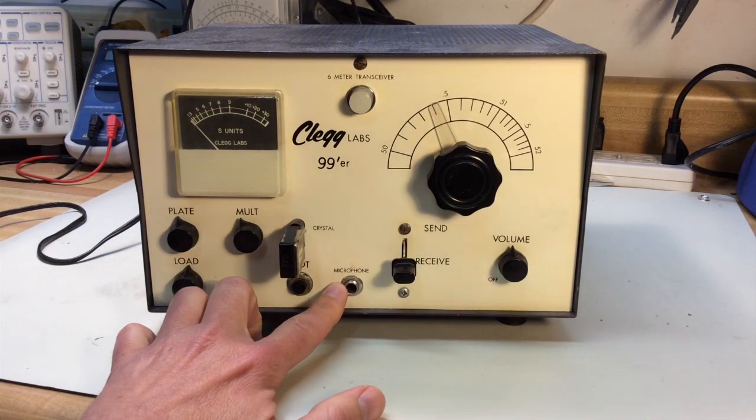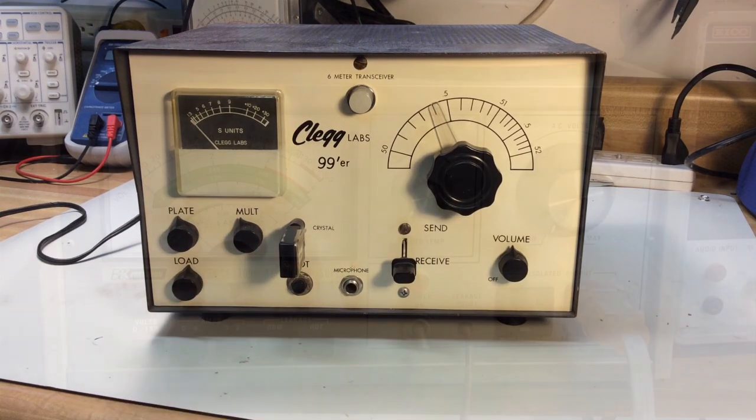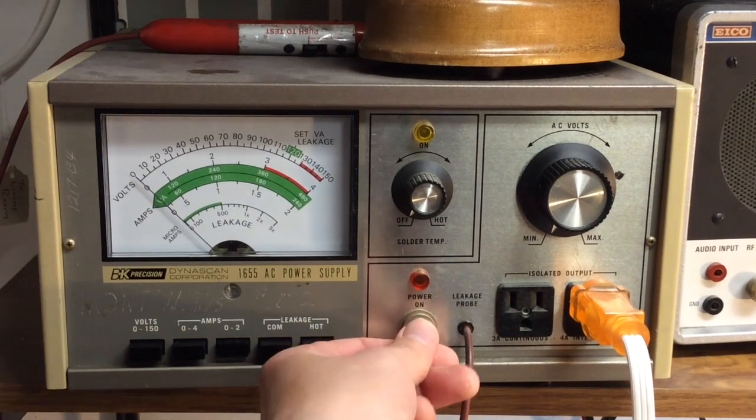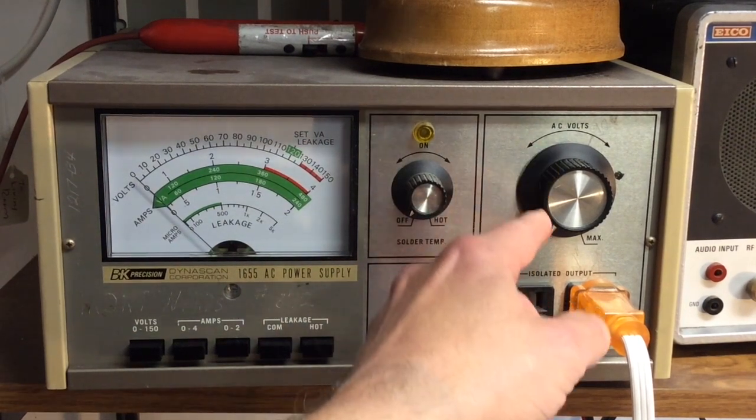Now, back in the day, AM was the popular mode to use on 6 meters and there's a lot of local activity on 6 meters in many locations.